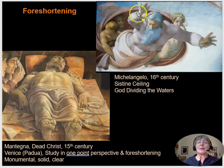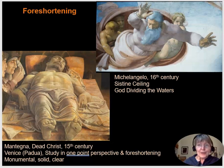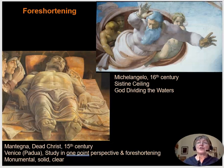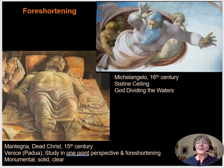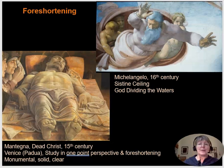Part of what makes that effective is foreshortening. We see, for example, the arm of God the Father viewed from an angle. Instead of being straight up in the air where we could see the full arm, we're seeing it foreshortened — a shortened form of the arm. Not quite as much of the arm as if it were fully extended in a straight view, but powerfully effective in making the figure seem to move in space.